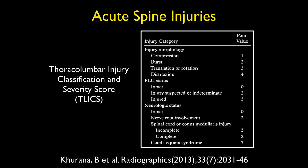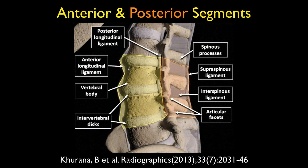Now looking at acute spinal injuries — there is a classification system. In outpatient imaging we don't typically grade these, but there has been a classification system developed. Typically what we look for is which segment of the spine is involved: the anterior segment includes the anterior longitudinal ligament, discs, and vertebral bodies; the posterior segment includes the spinous processes, interspinous ligament, and facet joints. Some people also describe a middle segment involving the pedicles.